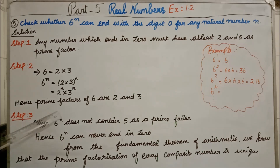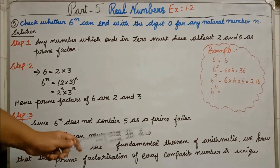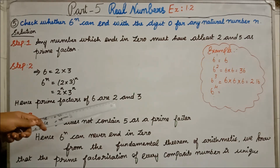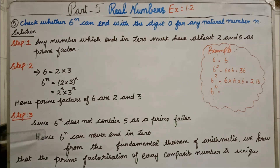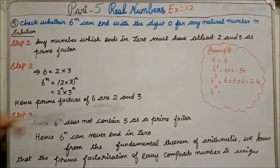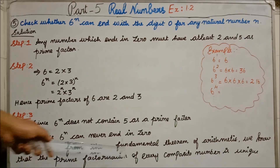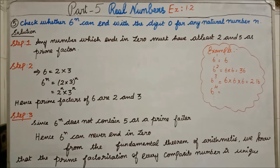Step 3: Since 6^N does not contain 5 as a prime factor — 6 has 2, but it does not have 5 — therefore 6^N can never end in 0. From the Fundamental Theorem of Arithmetic, we know that the prime factorization of every composite number is unique. Based on that, we are proving this.